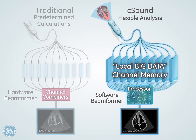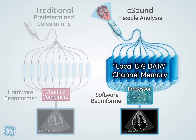While a hardware beamformer discards the data when one vector is created, the channel memory of the software beamformer stores data from consecutive transmits in a matrix, as shown on the right side.